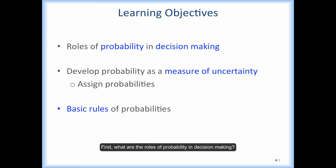First, what are the rules of probabilities in decision making? Second, how to develop probability as a measure of uncertainty? Third, utilize basic probability rules to compute probabilities.